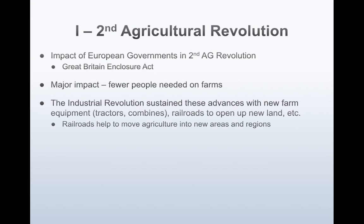The European government in the Second Agricultural Revolution had a huge role as well. The Enclosure Act encouraged consolidation of fields into single-owner holdings. Instead of having 30 farmers on one small plot of land, it all became enclosed into one large farm so it could be farmed much more efficiently. The impact was that fewer people were needed on these farms, which led to the Industrial Revolution.